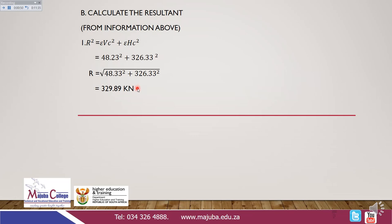Because the resultant is a force, we need to determine its direction. We use tan θ = ΔFy / ΔFx, substituting ΣFy = 48.23 and ΣFx = 326.33 to get the angle which gives the direction of your resultant.